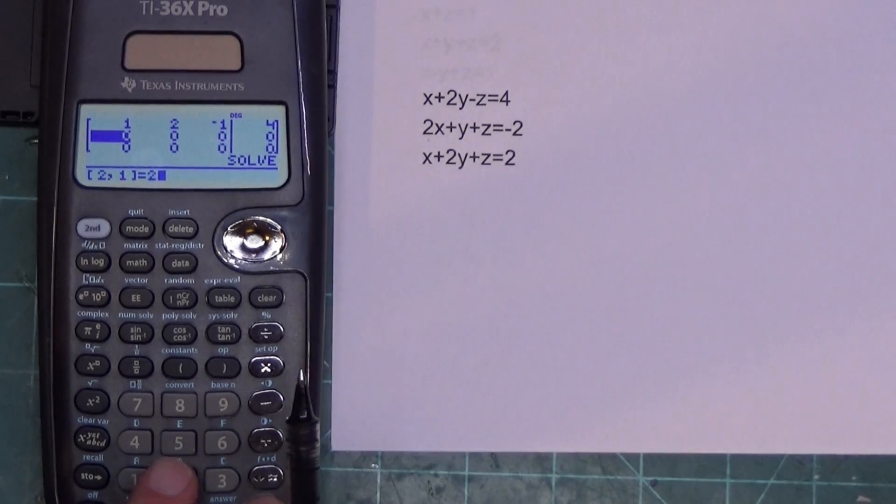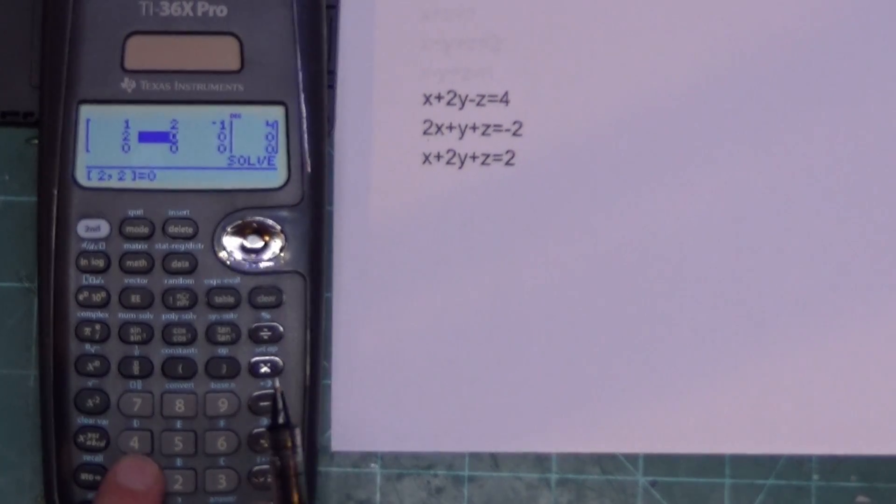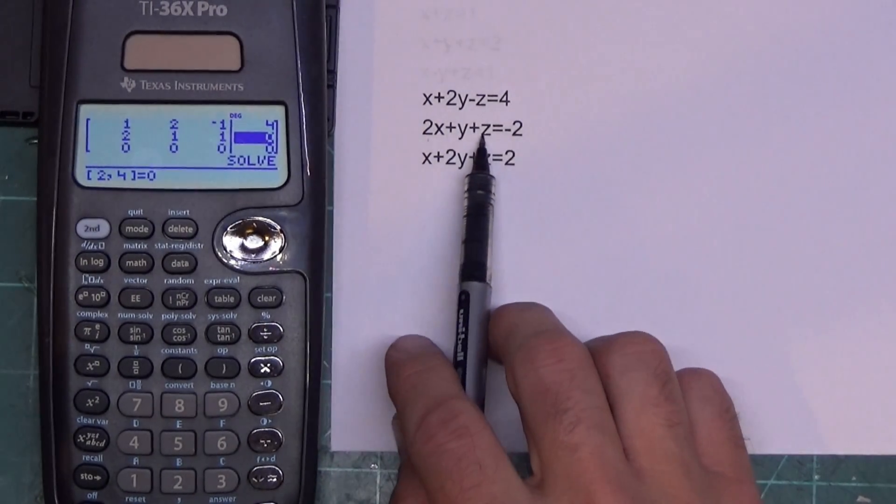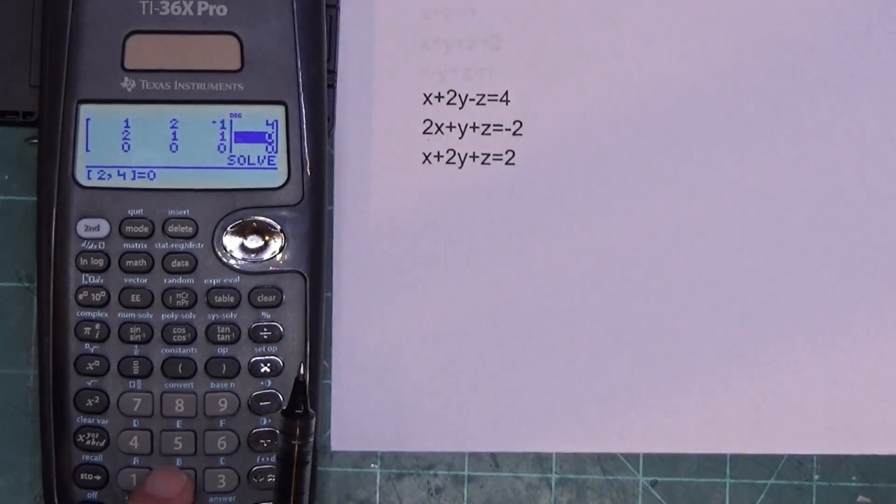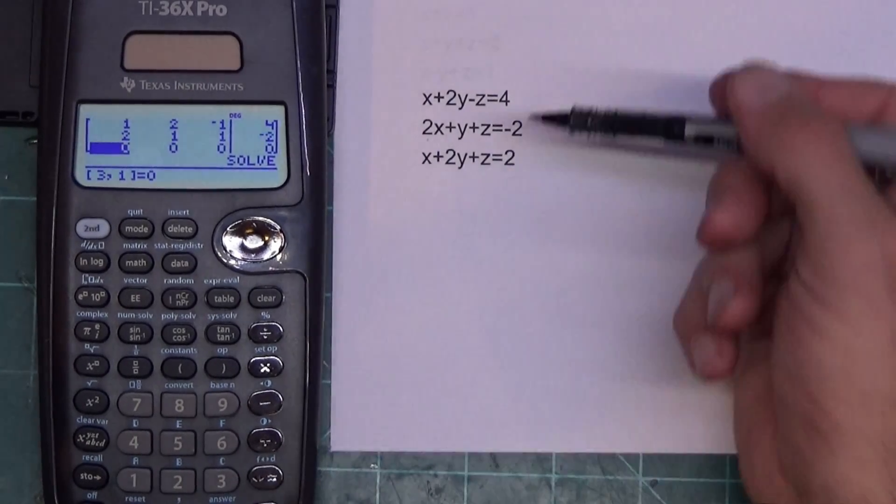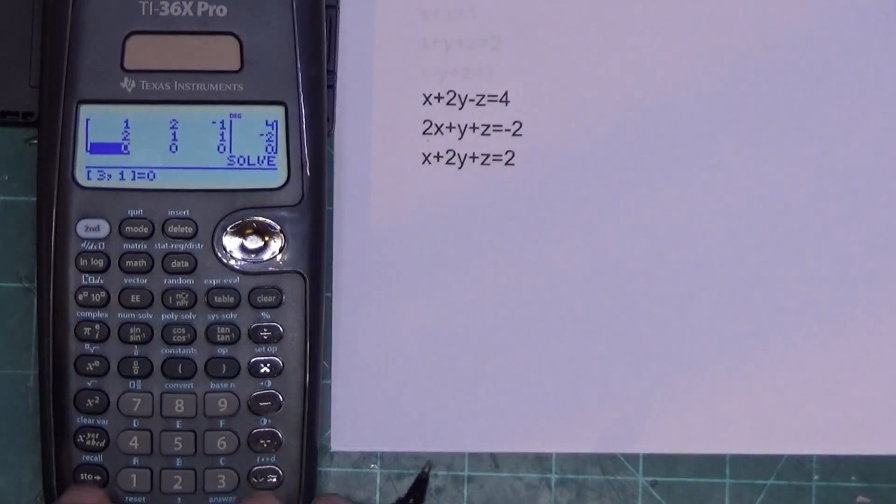The next row is going to be 2, enter, 1, enter, 1, enter. Now we're putting 1s because there's understood 1s in front of the Y and the Z. Again, over here, I'm going to type negative 2. So I've got the first two rows typed in. Let's type the third row. We're going to put 1, enter, 2, enter, 1, enter. Then over here, I type 2.